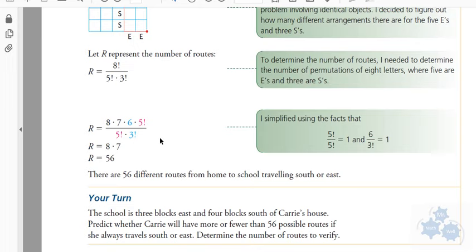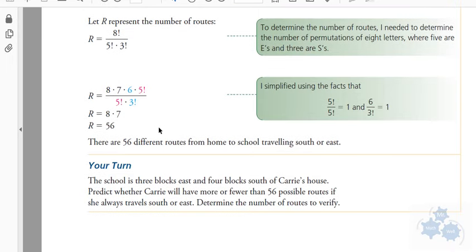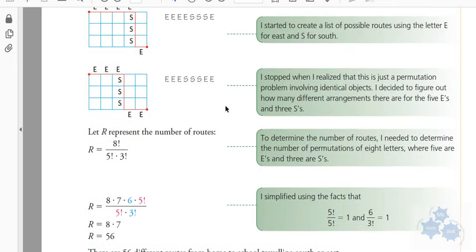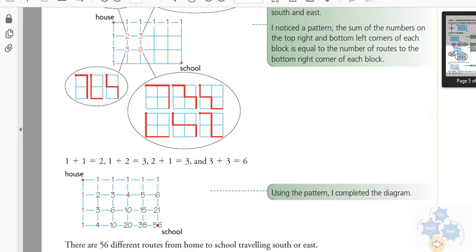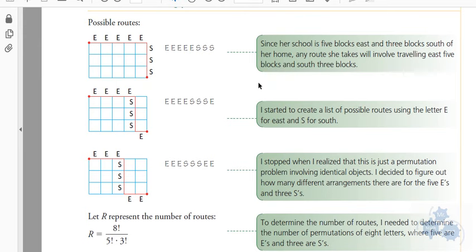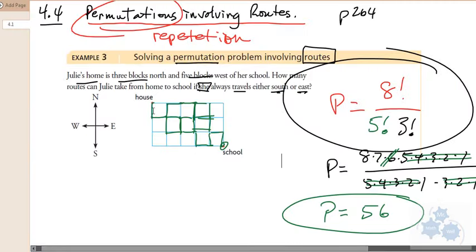Any questions? I just wanted to go over that one example there. So, the next section we're going to do is 4.7, which is basically putting all this together. Permutations, combinations, permutations with repetitions, fundamental counting principle. It's just kind of a little bit of everything all together. So, that's your example for the problems involving routes, and that's the only method that you're going to need to work on here.